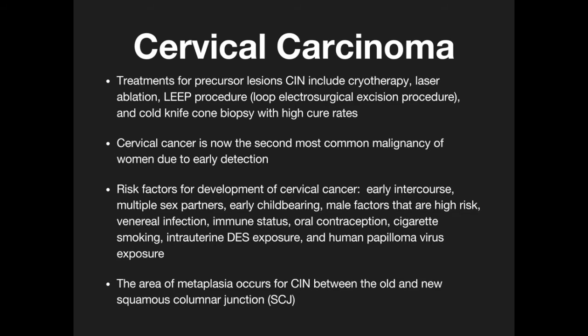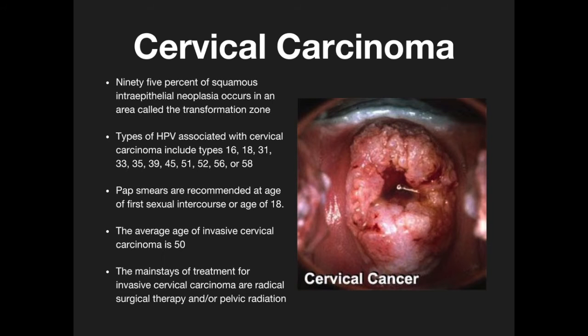The area of metaplasia occurs before the CIN between the old and new squamous columnar junction, also known as the SCJ. Ninety-five percent of squamous epithelial neoplasia occurs in the area called the transitional zone.